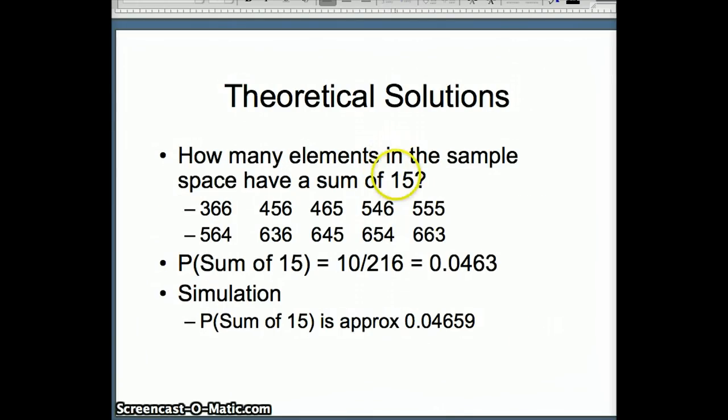Now to do 15, we do the same sort of thing. We try to list all of the elements in the sample space that give us a sum of 15. So you can see we found 10 elements in our sample space that add up to 15. So therefore, our probability for a sum of 15 is exactly 10 out of 216, 0.0463. This is our theoretical probability. Our simulated situation gave us an approximate answer of 0.04659. Our relative frequency of success, 0.04659, our theoretical probability, 0.0463. Fairly close.